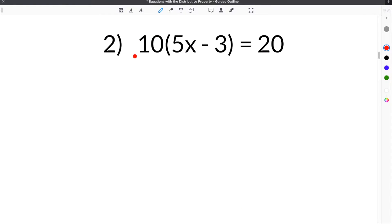Our second practice problem gives us the equation 10 times the quantity 5x minus 3 equals 20. So the same thing applies here. We have our 10 in front of this quantity, which means we have to distribute the 10 to both terms inside of our parentheses here.